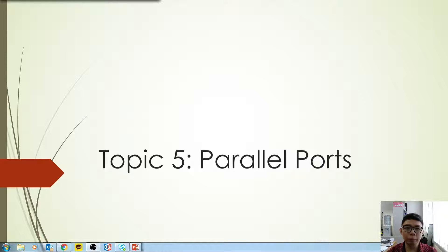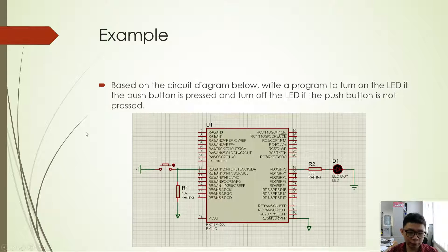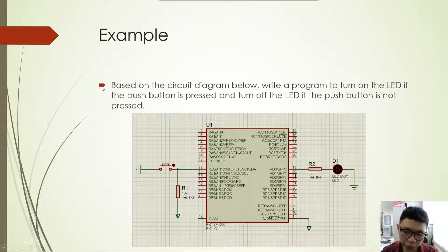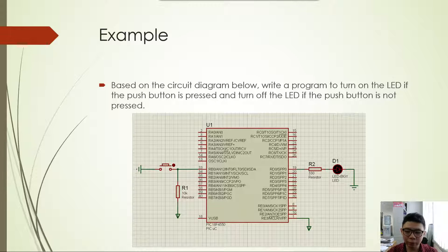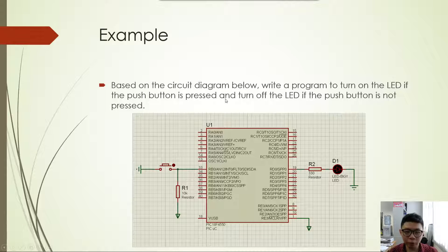Hi guys, today I'm going to go through the question that we did in class. I'm going to go through the tutorial on how to construct the circuit and how to write the program. The basic idea is that we want a circuit with a PIC, a switch, and a resistor, so whenever the button or switch is pushed the LED should light up.